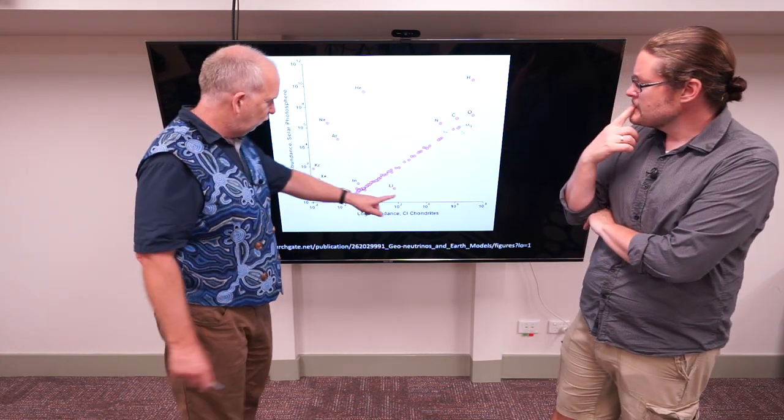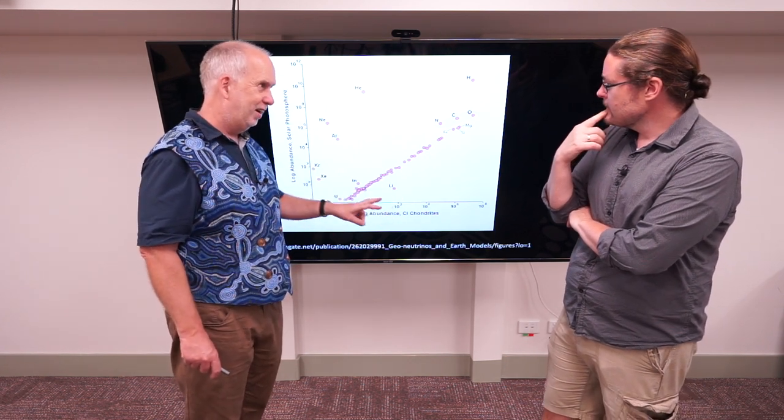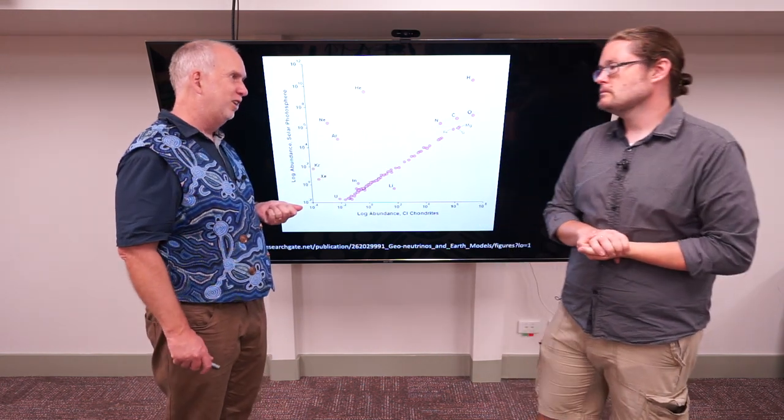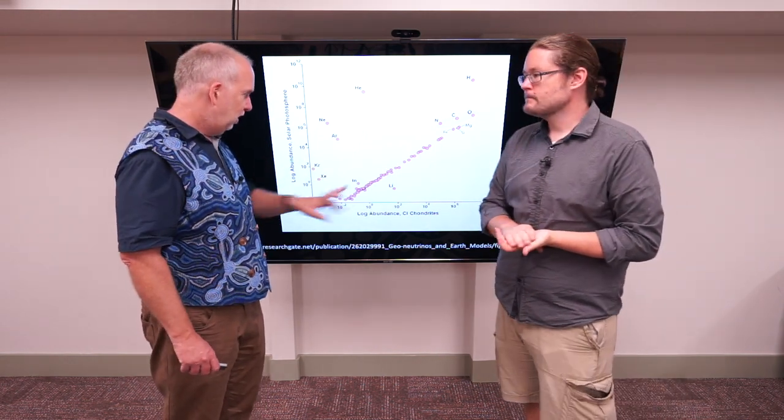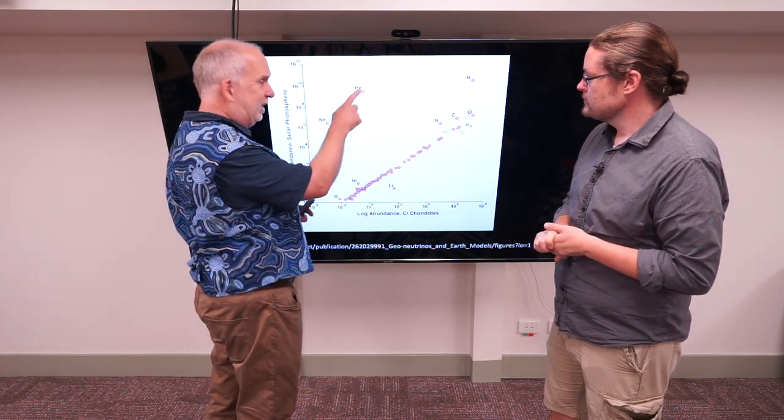Let's look at the ones that are way off. There's only one at the bottom which is more common in the asteroids than in the Sun, and that's lithium. This is fairly well understood because lithium is very fragile and gets destroyed in the Sun by nuclear reactions. Then you've got all these gases like Krypton, Xenon, Argon, Neon, Helium. These are all inert gases.